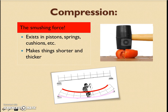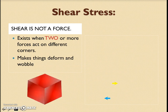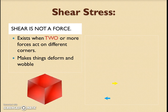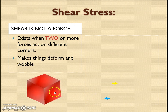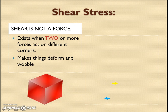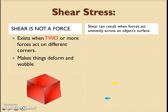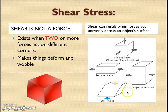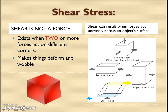Tension and compression are the two big internal forces we need to worry about. In terms of stresses and strains, the big thing to watch out for is shear. Shear is not a force — it exists when two or more forces act on different corners. Shear makes things deform and wobble from side to side — the jello effect. Shear can result when forces act unevenly across an object's surface. The top slides one way, the bottom slides another.